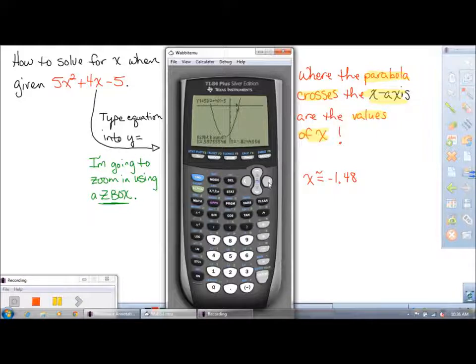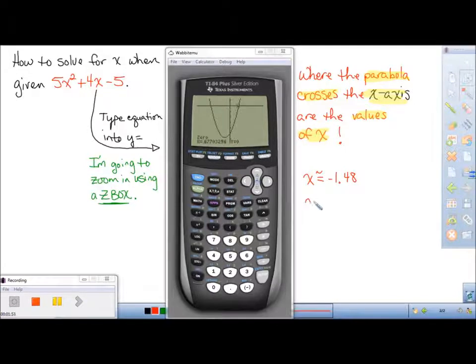Get to the left bound, which is below. Get to the right bound, which is above. Take a guess. Where y is 0, we get another answer of x equals about 0.68.